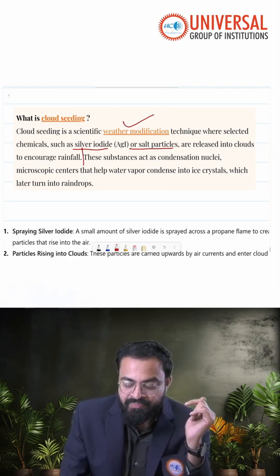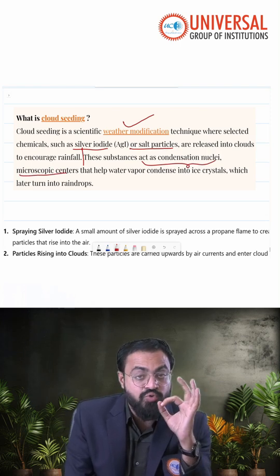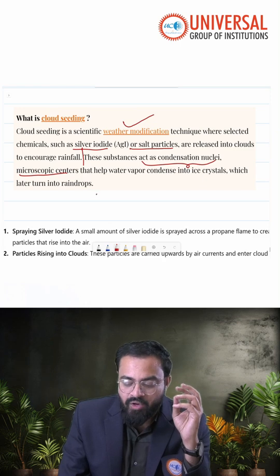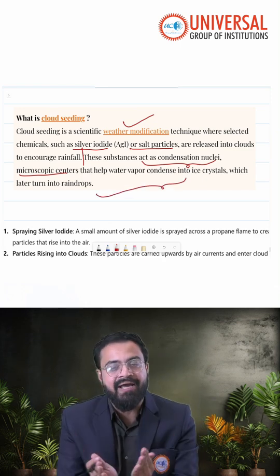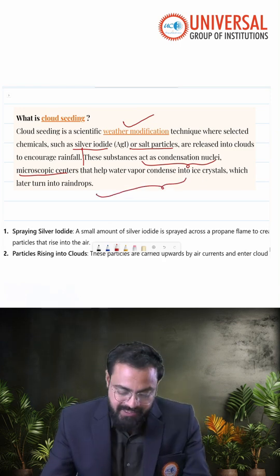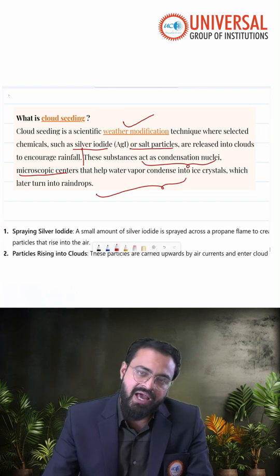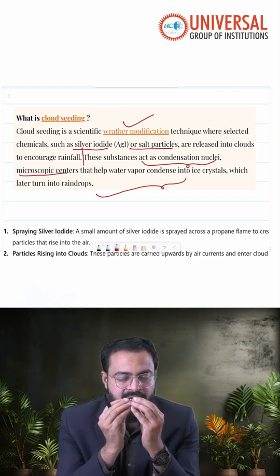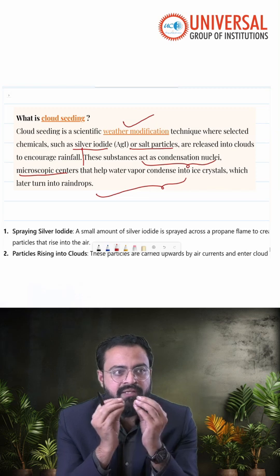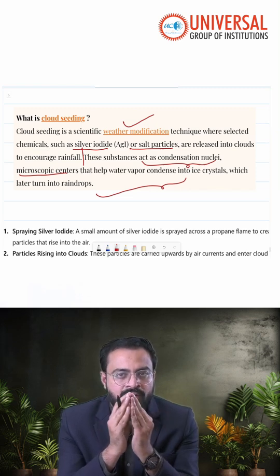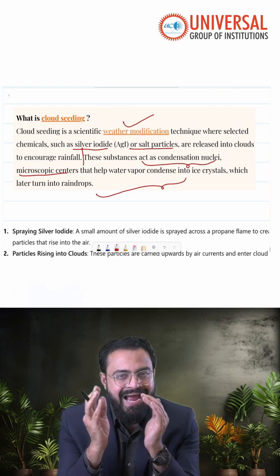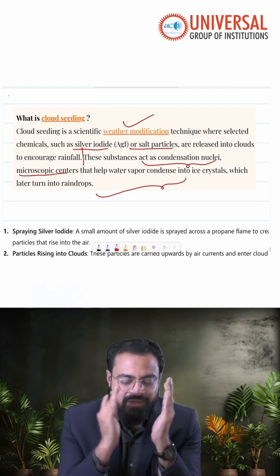These substances act as condensation nuclei — that is the microscopic centers — that help the water vapor condense into ice crystals, which later turn into rain drops. Because sometimes within the natural clouds, the water drops are too small to form into rain drops. So this will act as condensation nuclei.